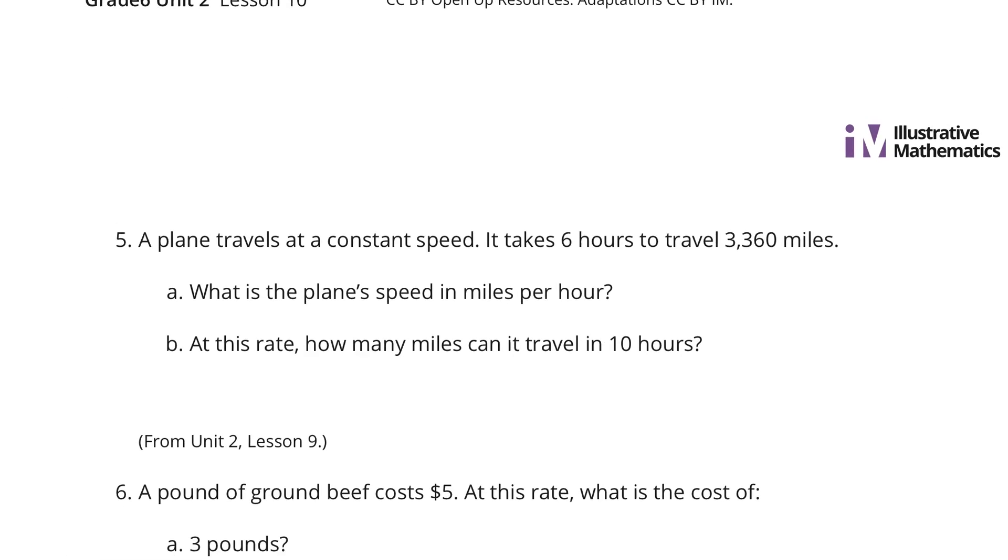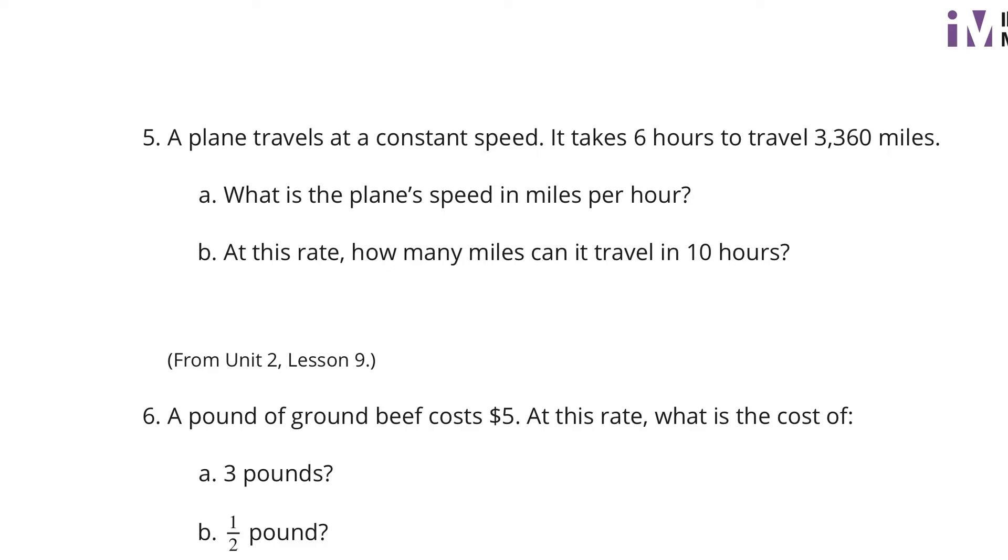Question five. A plane travels at a constant speed. It takes six hours to travel 3,360 miles. What's the speed in miles per hour? All right. So for A, 3,360 miles in six hours. For miles per hour, I need to get this to be one hour. And how many miles? So if I simply divide six by six, I get one. So I need to divide the top here by six. And 3,360 divided by six is 560 miles per hour. And so 560 miles per one hour is our solution for A.